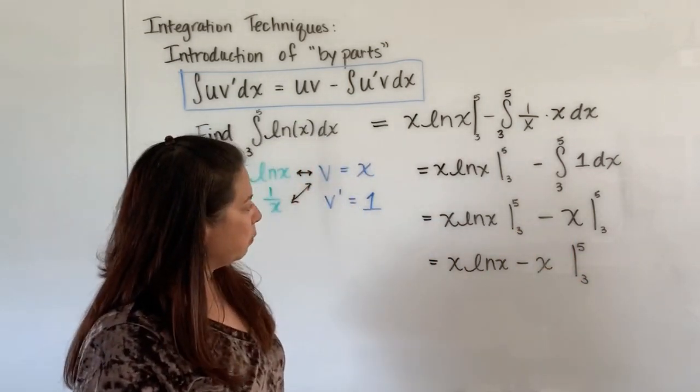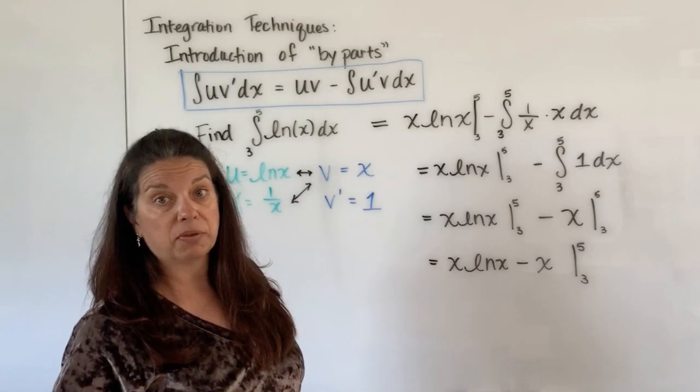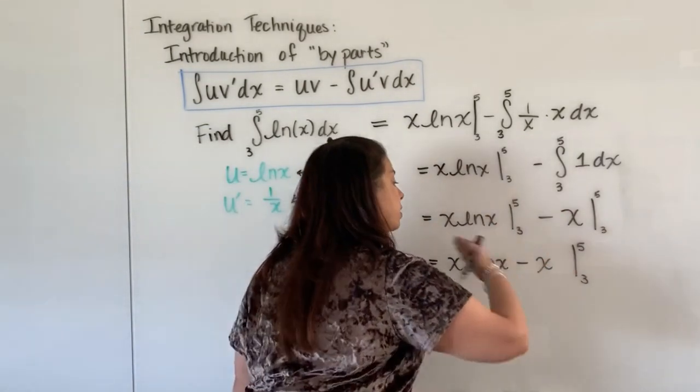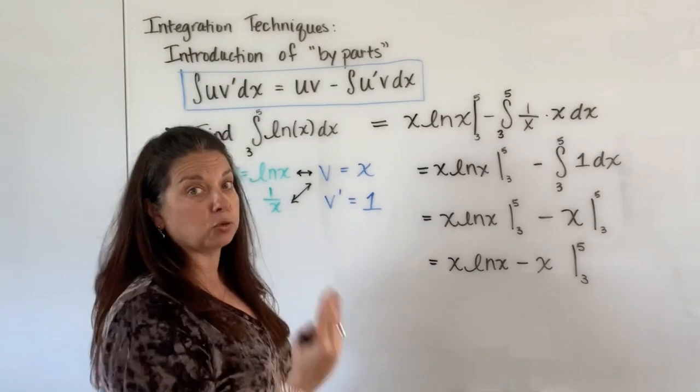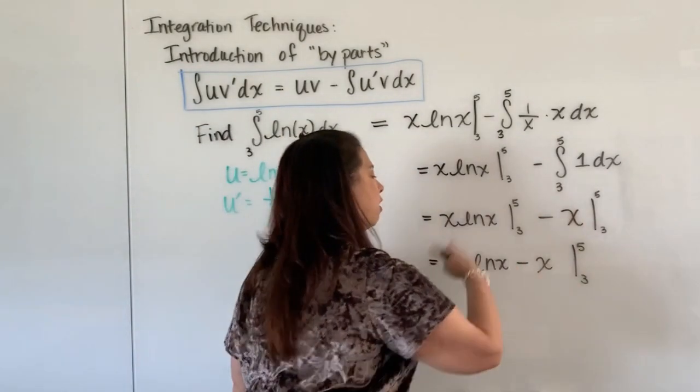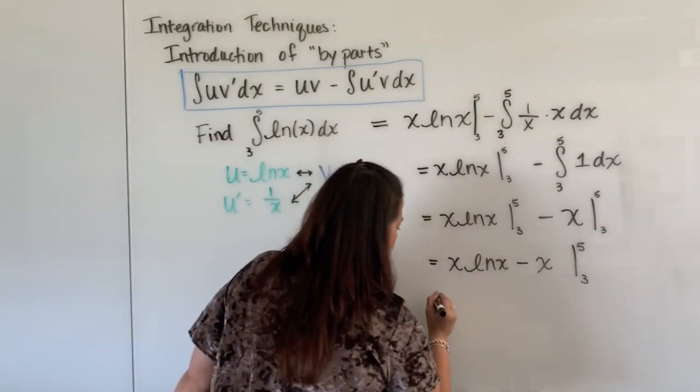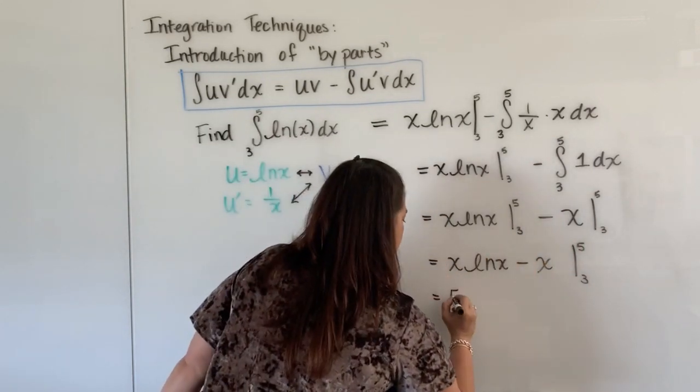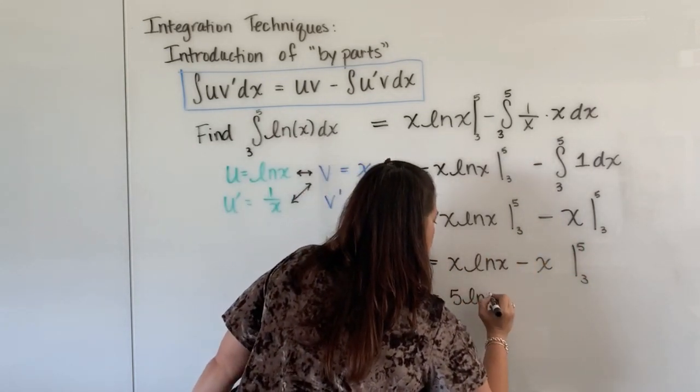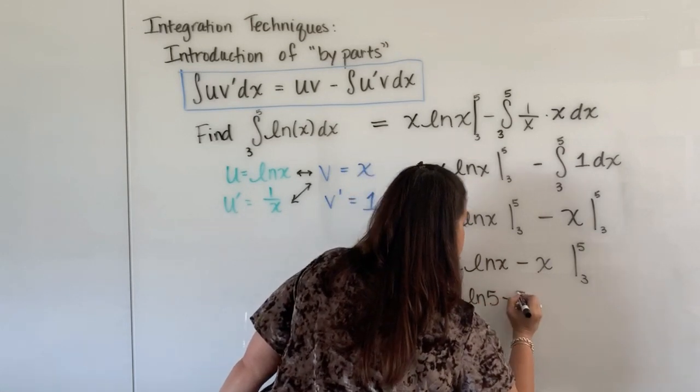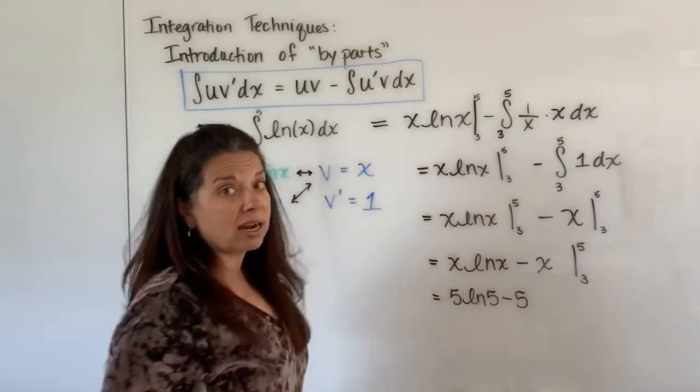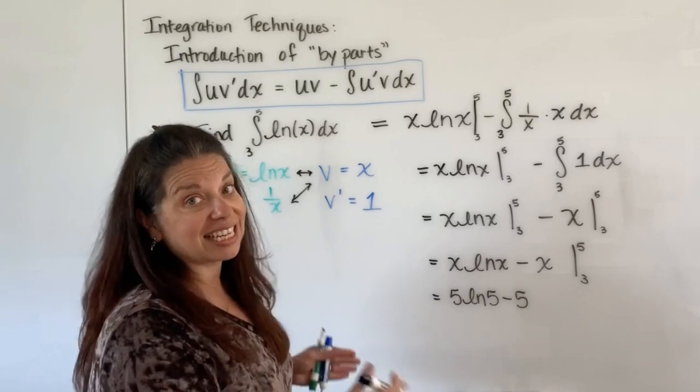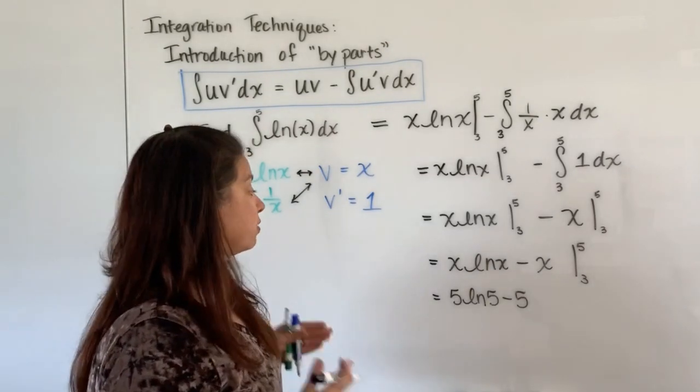All right, so from this point, we are now ready to use the fundamental theorem of calculus that says plug in your 5 into all your x's and then subtract off the bottom boundary of plugging in your 3. So we evaluate this expression where x is 5. So we have 5 natural log of 5 minus 5. No, none of that can be simplified. It just is this 5 natural log of 5 subtract 5.